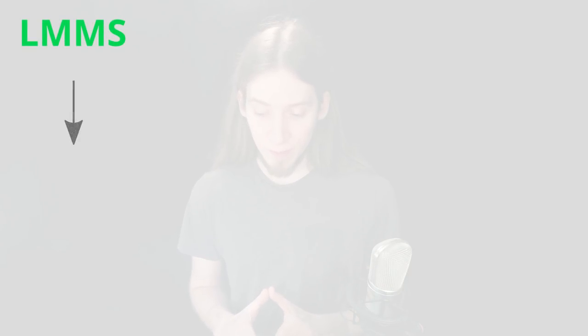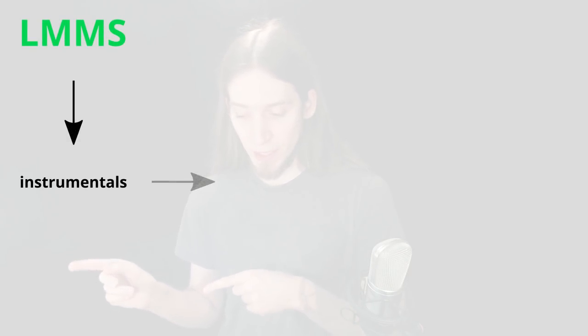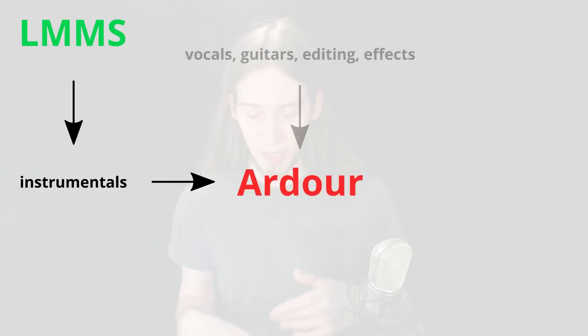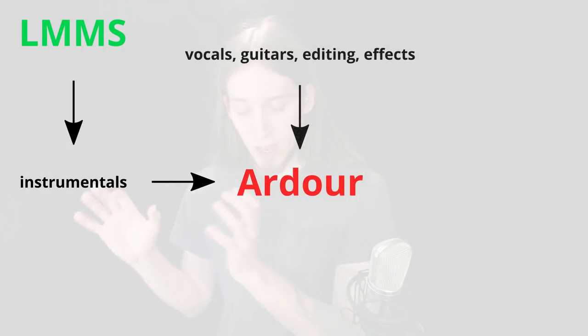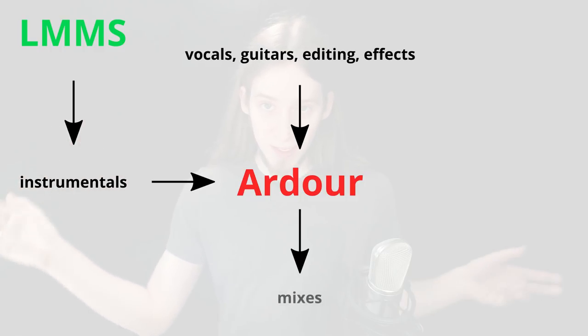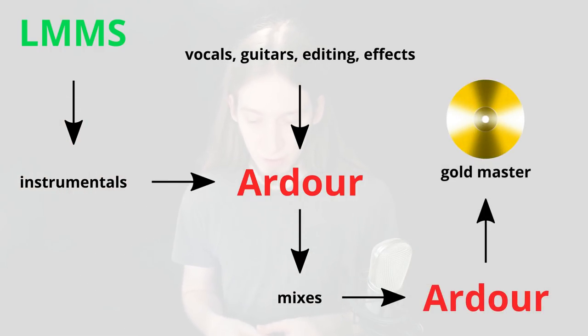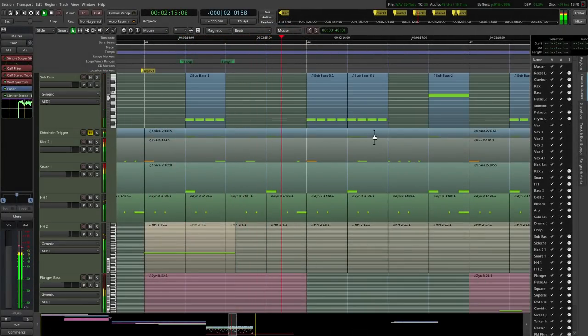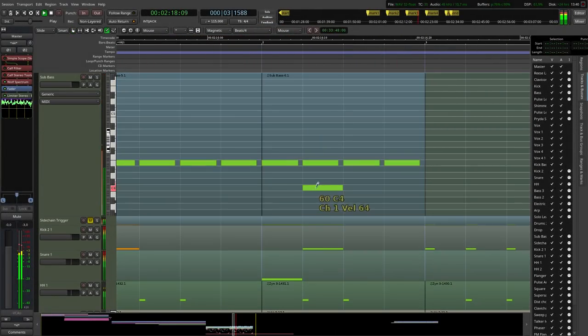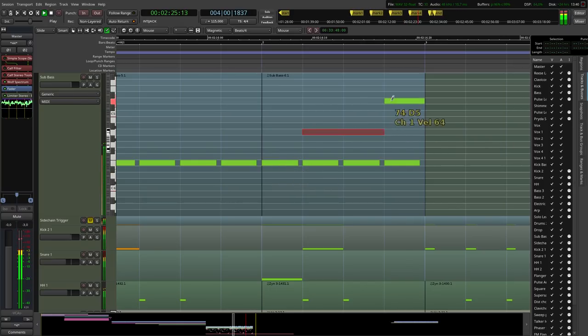In order to do everything I wanted, I had to use both programs together. I used to make instrumentals in LMMS, export a mix, import it into Ardour, add vocals, guitars, or extra editing and effects, then export another mix and finally master all the mixes in a separate Ardour session. However, Ardour was developing its MIDI workflow for quite a few years, and once I found it had matured enough to be production ready, I decided to drop LMMS and simplify my workflow.